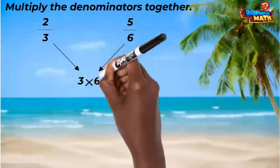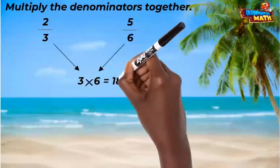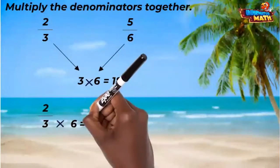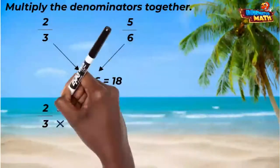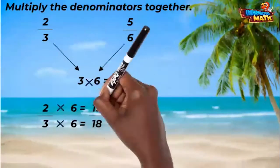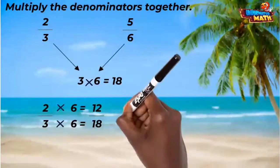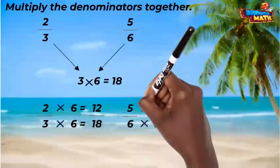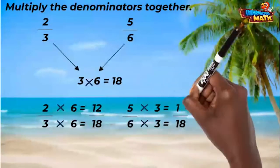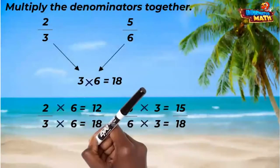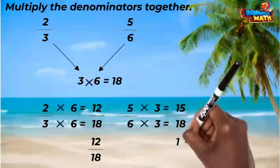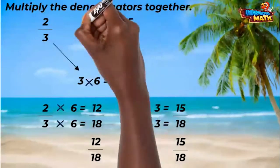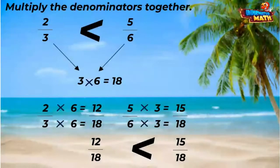Let's compare two-thirds and five-sixths. We can multiply the denominators together — three times six — to get eighteen. Then when we multiply the numerators to make equivalent fractions, we get twelve-eighteenths and fifteen-eighteenths. We can compare these and see that fifteen-eighteenths — so five-sixths — is greater.